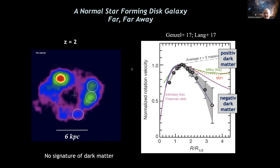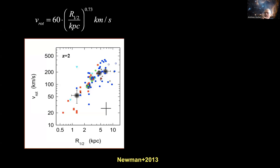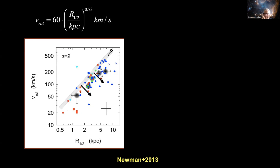I think we have an explanation, though it solves this problem but leads to another puzzle. You can take the rotation curves and plot maximum rotation versus half-mass radius. There is a correlation — the larger the galaxy the more mass it has and the larger the maximum rotation — very similar to the Tully-Fisher relationship for present-day galaxies. When comparing to present-day galaxies, the high-redshift galaxies have smaller rotation on average and larger half-mass radii for a given mass. This is the opposite of what you would expect.